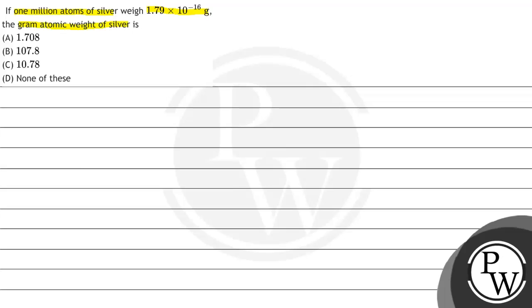the gram atomic weight of the silver is - agar 1 million atom of silver weight hota hai, 1.79 × 10⁻¹⁶ gram, then silver ka gram atomic weight value kitna hoga?